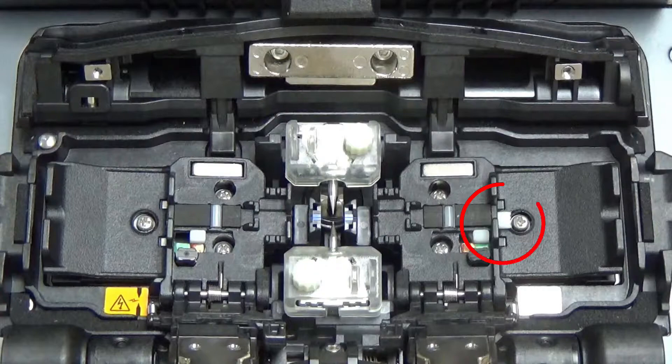You can do the same on the right clamp if you're working with two loose buffer fibers, but in my case here I've got a tight buffered fiber on the right side so I won't need to adjust that clamp.